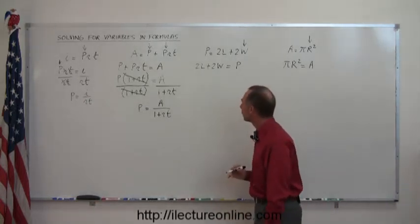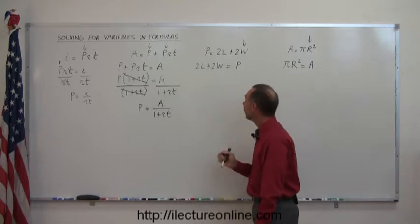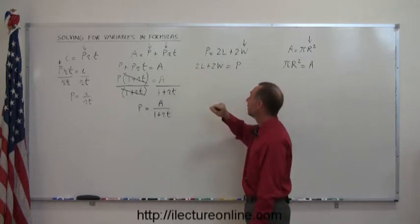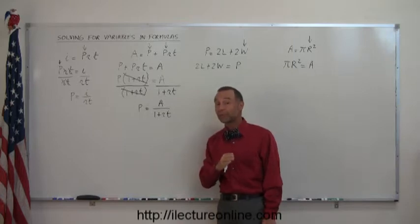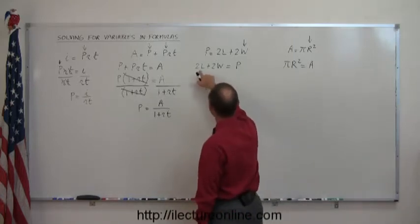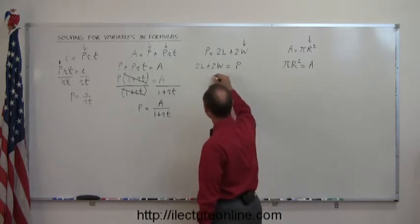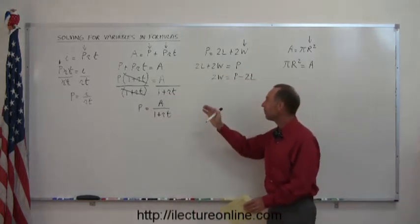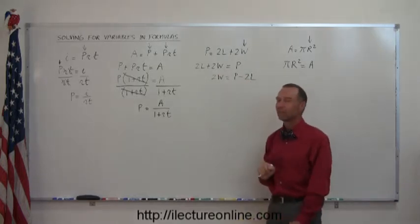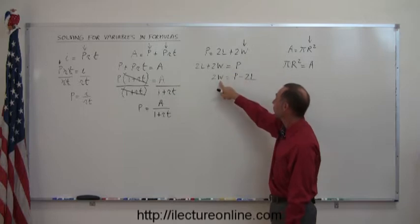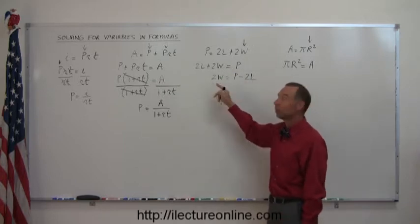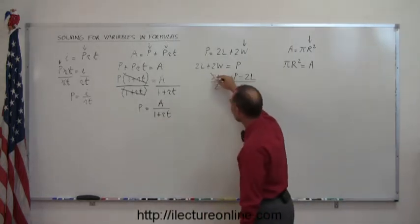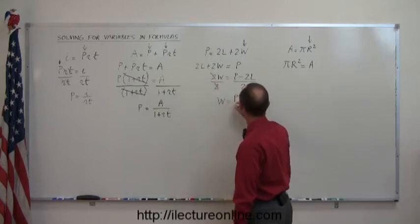Now in this case we have two terms on the left side: one contains the variable we're looking for, the other does not. So we move 2l to the other side — whenever we move an item across the equals sign, the sign changes. This becomes 2w equals p minus 2l. At this point we have the variable we want isolated on the left, but we still have the number 2. So we divide both sides by 2, those cancel, and we have w equals (p minus 2l) over 2.